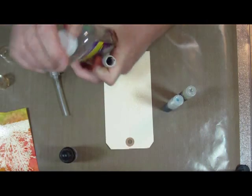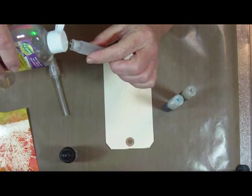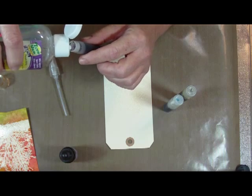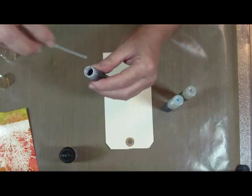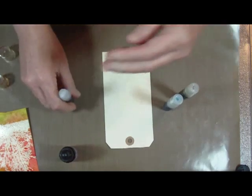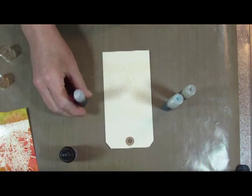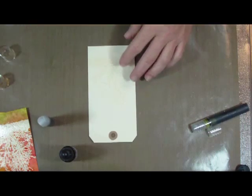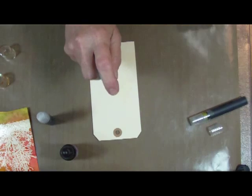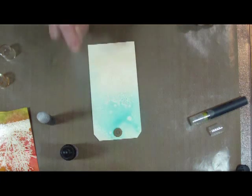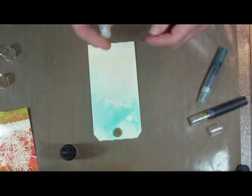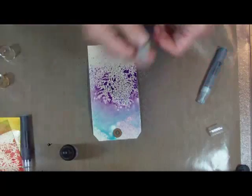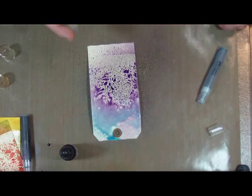Take and put some, I use a dropper of the distress and put it into the mini mister. And then I'm gonna fill the rest of my mini mister up with water, not adding any perfect pearls or anything. And now I have my own color wash made from water-based re-inkers. So now I can take and spray these on this tag just very randomly.